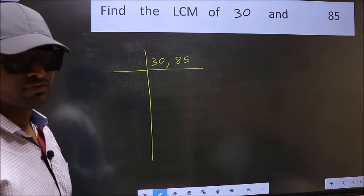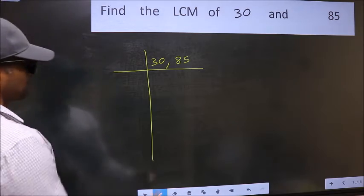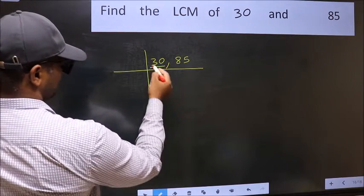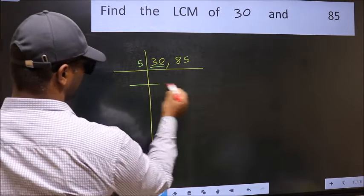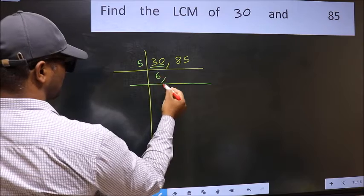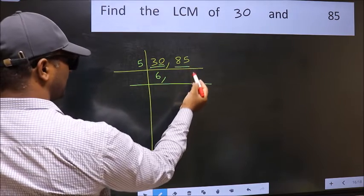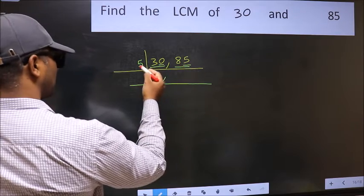Now you should focus on the first number which is 30 here. In this number, last digit 0, so take 5. When do we get 30 in 5 table? 5, 6, 30. The other number, 85, last digit 5, so this number is divisible by 5.